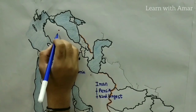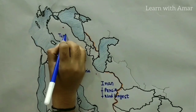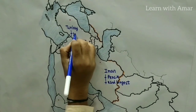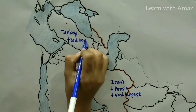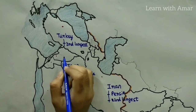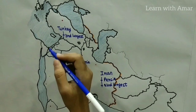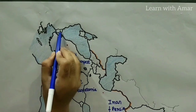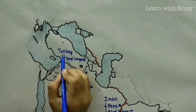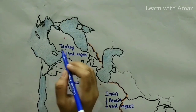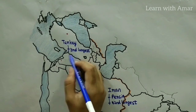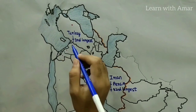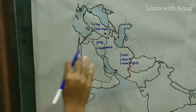Then this country — Turkey. Turkey is the third largest country in West Asia. Turkey is found in Asia as well as Europe. This small part is in Europe and this part is in Asia. The Asian part of Turkey is known as Asia Minor, or the Anatolian Plateau, or the Anatolian Peninsula. So these three are the countries of the first part.